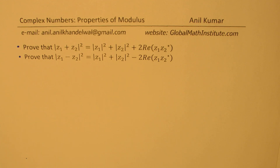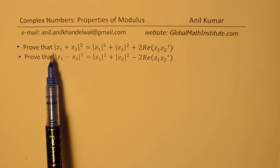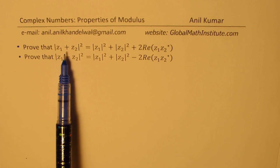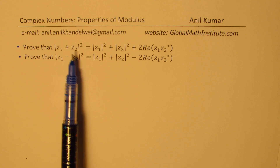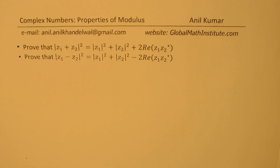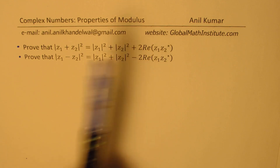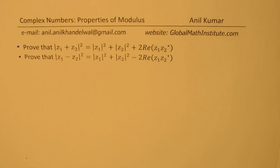We need to prove that modulus of z1 plus z2 whole square is equal to |z1|² plus |z2|² plus two times the real value of z1·z̄2. That bar notation indicates the conjugate.